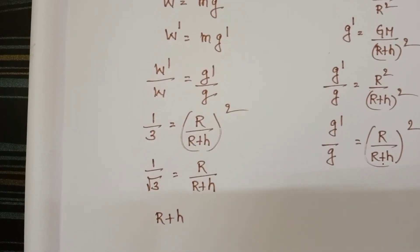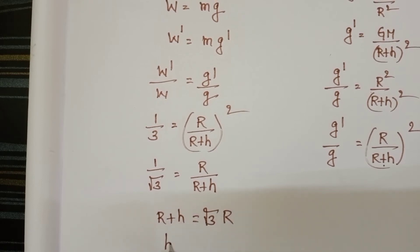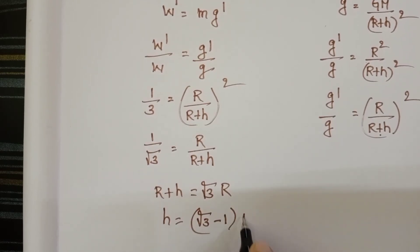r plus h equals root 3 times r. h equals (root 3 minus 1) times r.